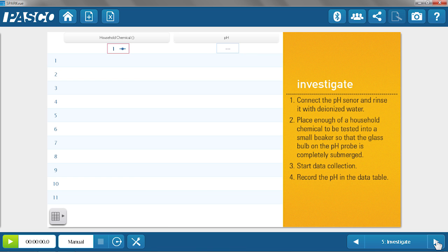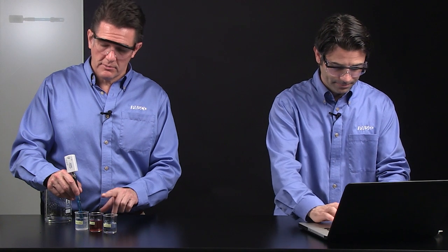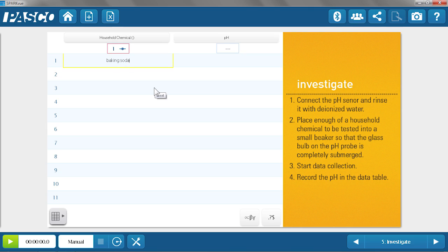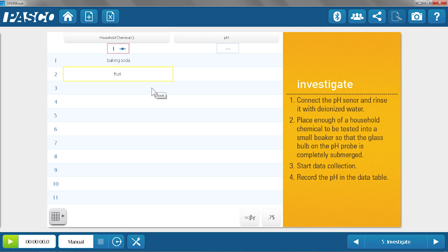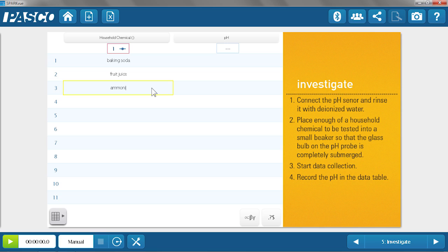And now we get right into the data collection. So this is organized as a table, so I'm actually going to organize myself before I start collecting all the data. Ron will tell me what chemicals we'll be testing. The first chemical is the baking soda solution. The second one is a fruit juice solution. And the last is an ammonia solution. I could add more or less chemicals here to this table. Right now we're going to stick with three.